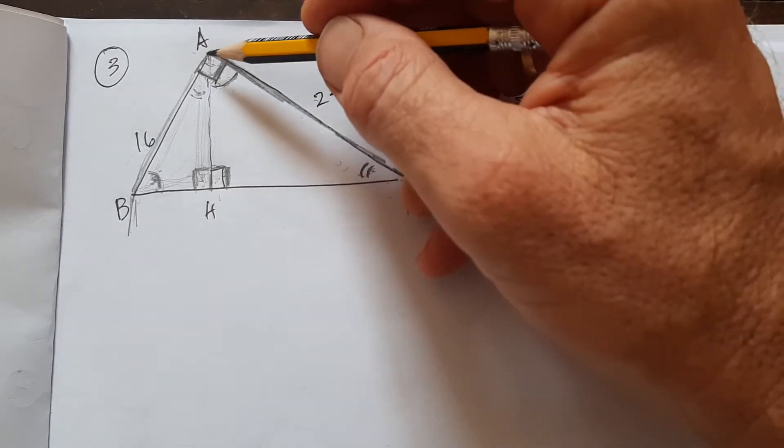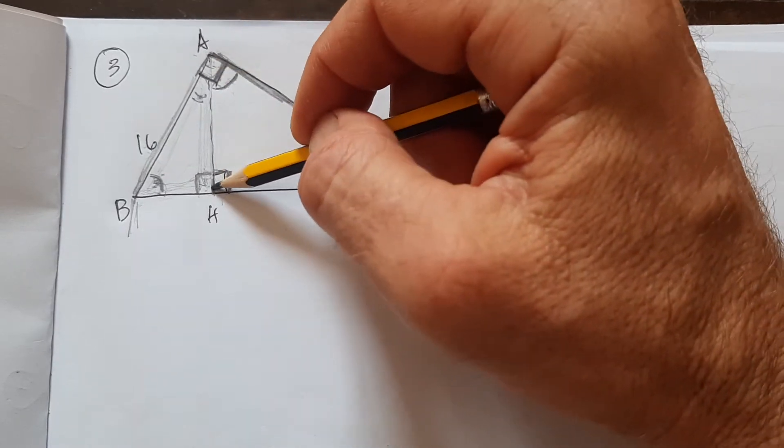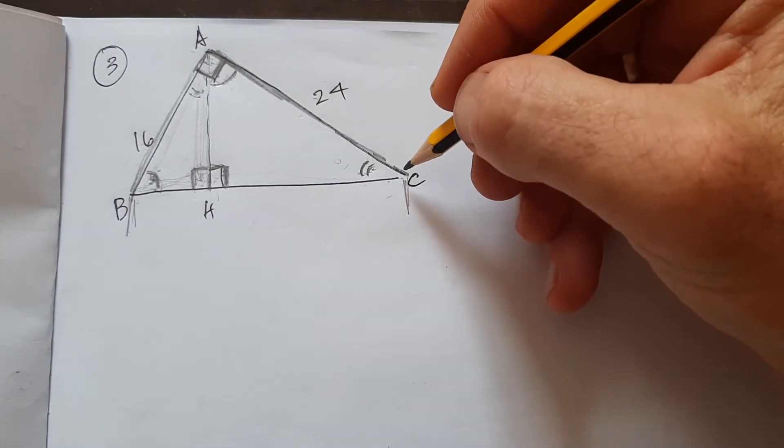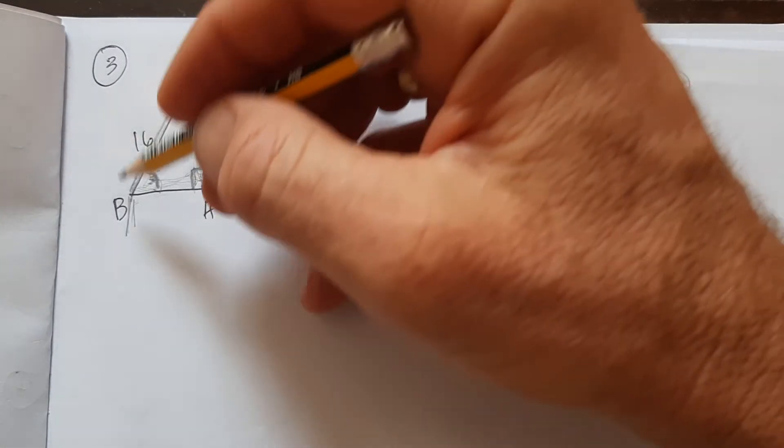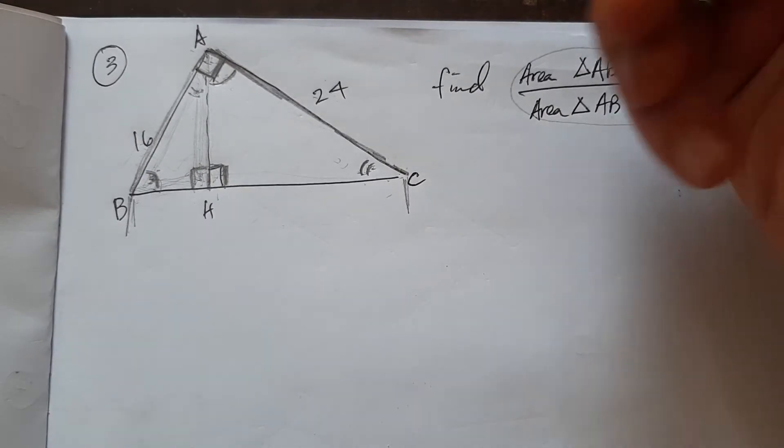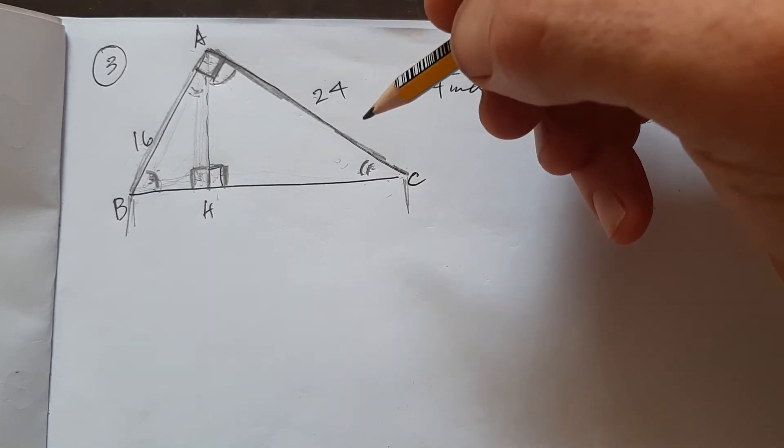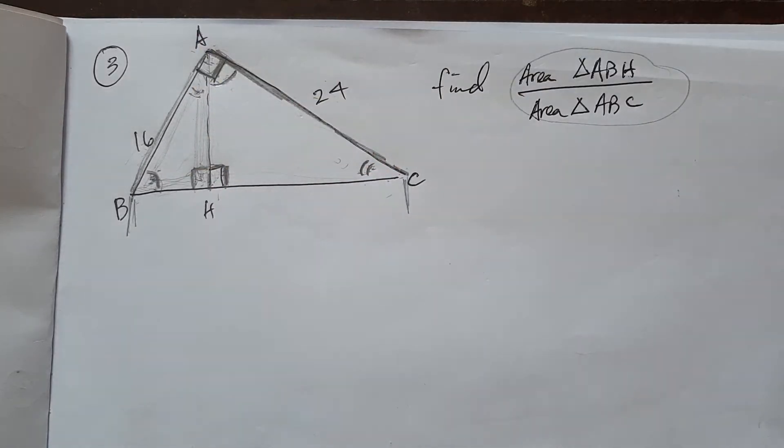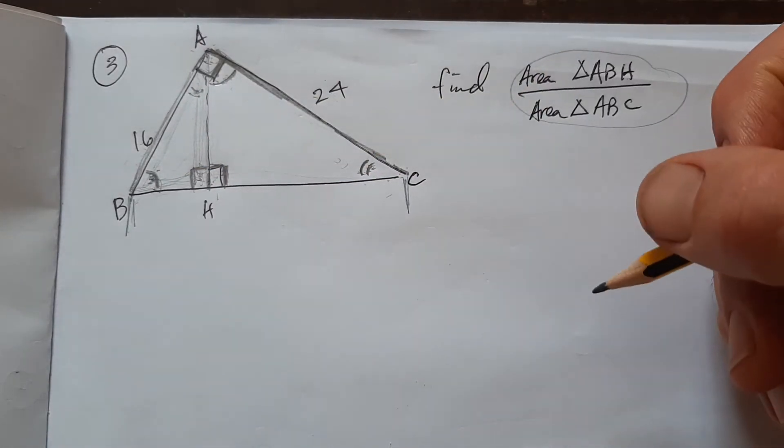So angle A, I'll try to do this in order. Triangle AHB is congruent to triangle CAB is congruent to triangle CHA. So there's three, not congruent, there's three similar triangles there.